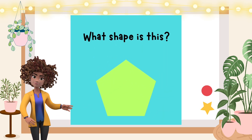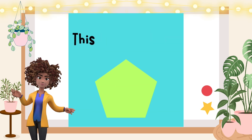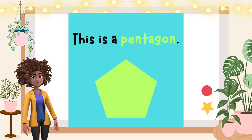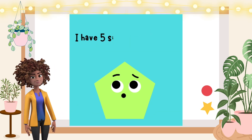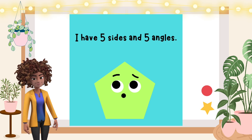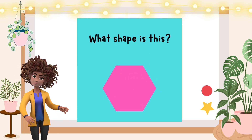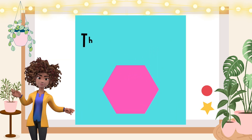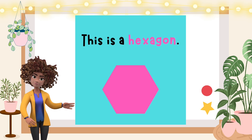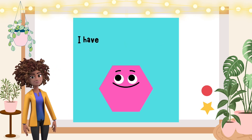What shape is this? This is a pentagon. I have five sides and five angles. What shape is this? This is a hexagon. I have six sides and six angles.